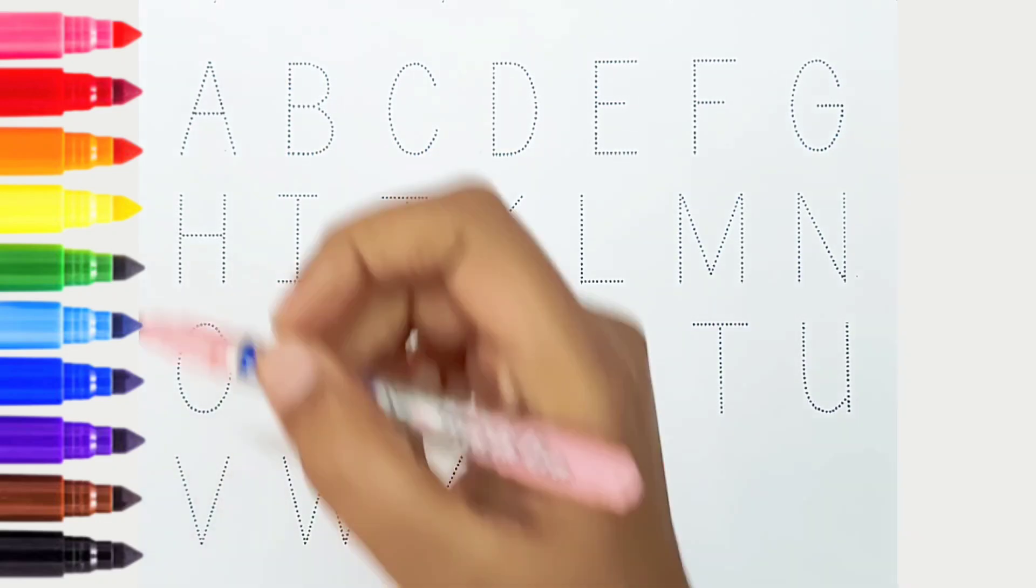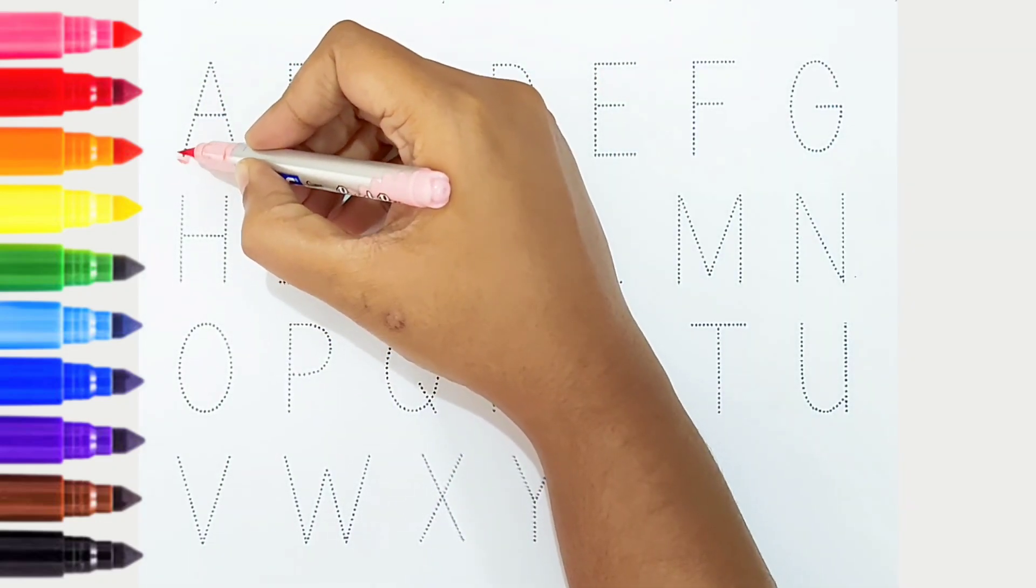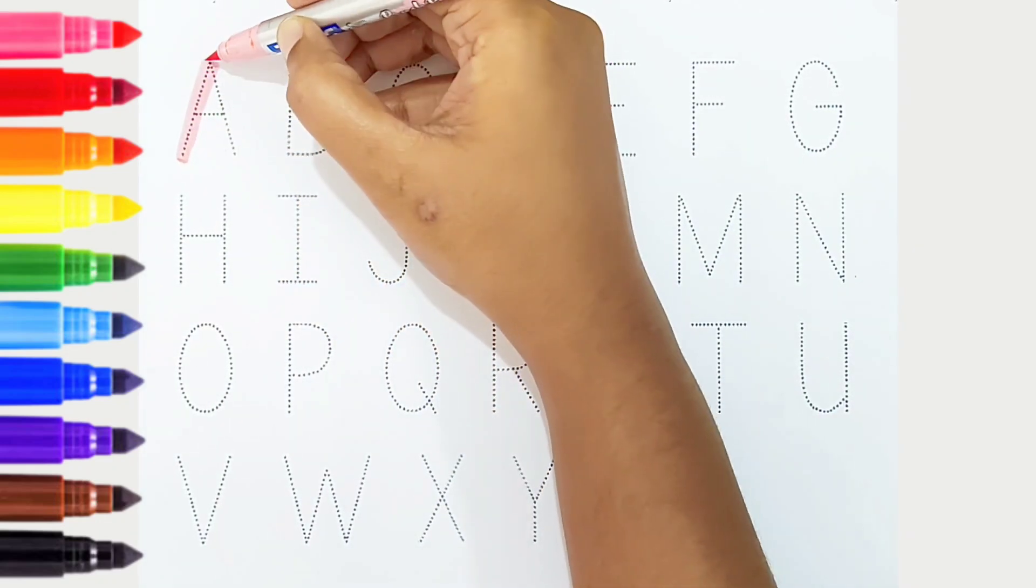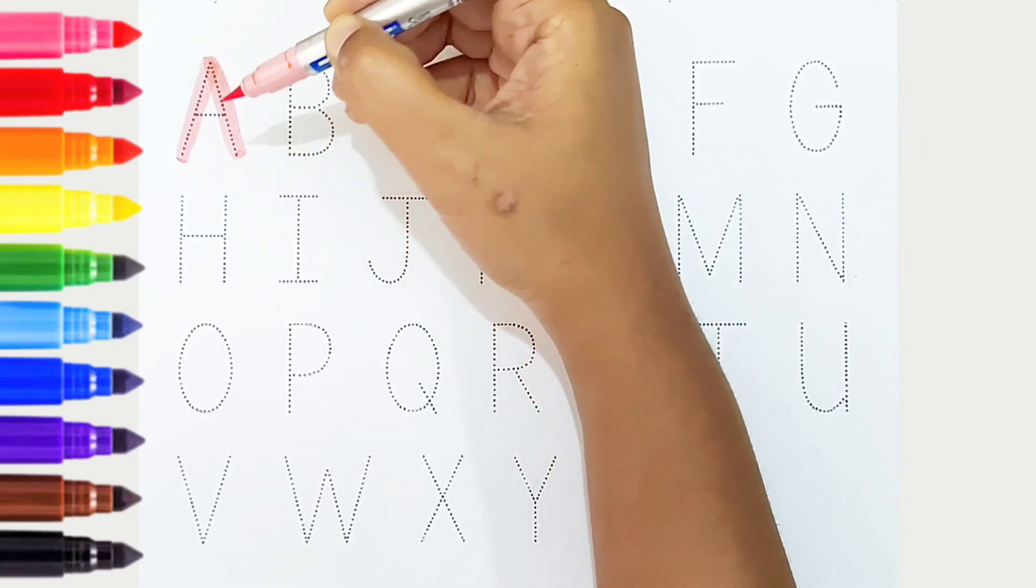We can learn the alphabets from A to Z. Let's begin! A, light pink color. A is for apple.